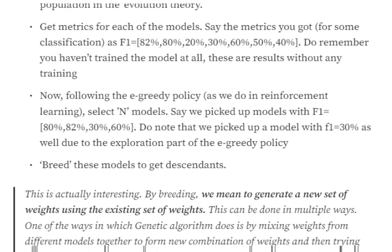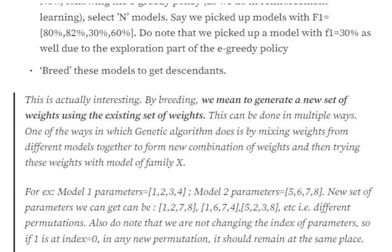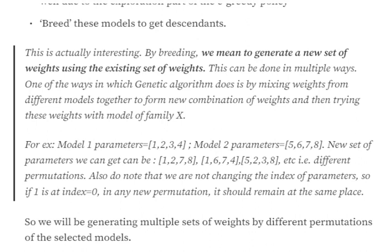Now we breed these models to generate descendants. By breeding, we mean mixing and matching weights from different models. For example, model one has weights 1, 2, 3, 4 and model two has weights 5, 6, 7, 8. A new set of weights could be 1, 2, 7, 8 — first half from model one, second half from model two. Or 1, 6, 7, 4 — mixing individual weights from each model. Likewise, we can have multiple permutations. Note that we are not changing the position of the elements; we maintain their indexes but mix and match values from different models. This is how we generate multiple permutations of descendants from the original parents who performed well.